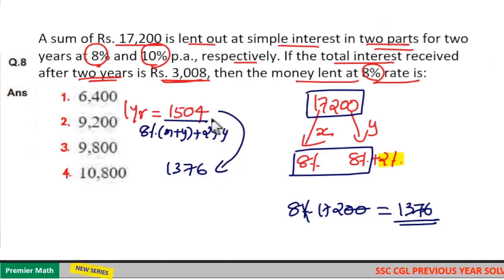So, subtract it from 1,504. You will get 2% of Y. 1,504 minus 1,376: 14 minus 6 is 8, 9 minus 7 is 2, 14 minus 13 is 1. So, 2% of Y is equal to 128.